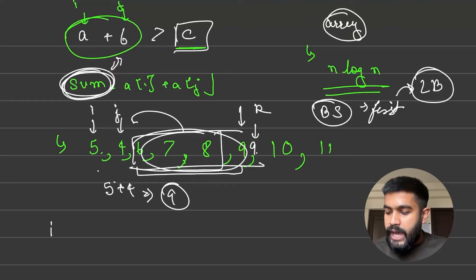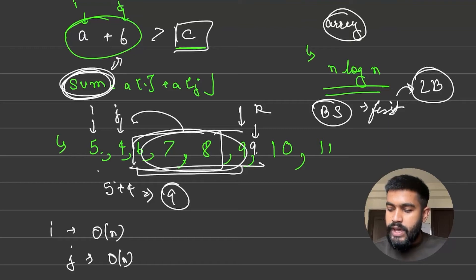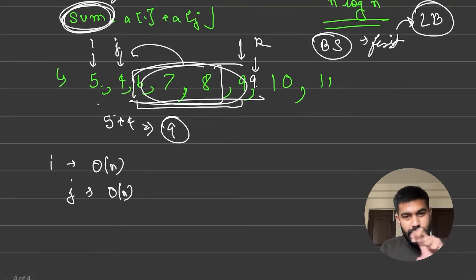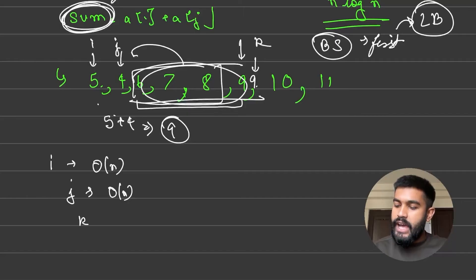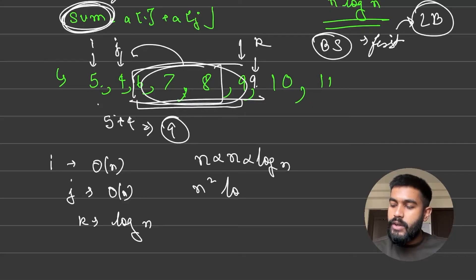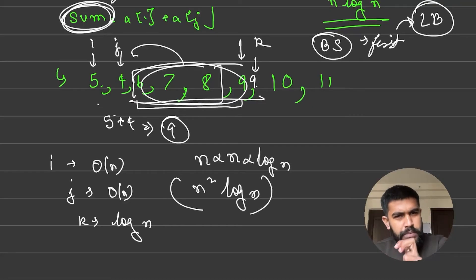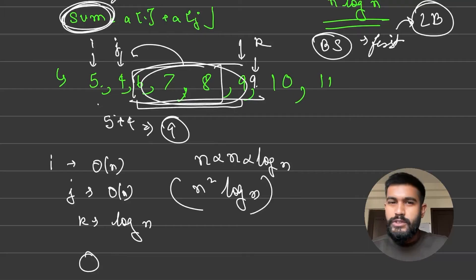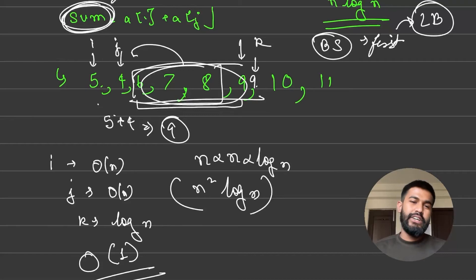For the complexity of this approach: i runs O(n) times, j also runs O(n) times, and finding k using lower bound takes O(log n). So total time complexity is O(n) × O(n) × O(log n), which is O(n² log n). Space complexity is O(1) since we use in-place sorting and no auxiliary space.